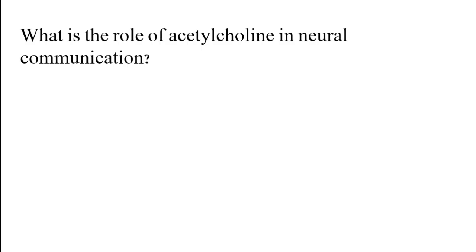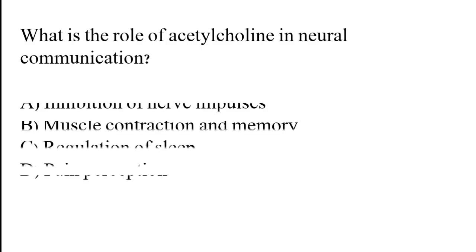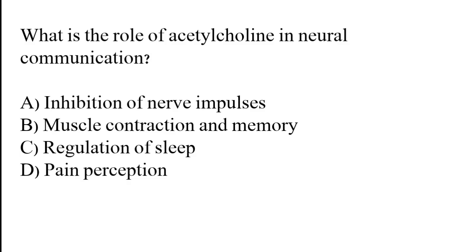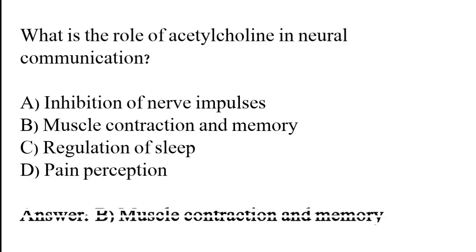What is the role of acetylcholine in neural communication? Options: Inhibition of nerve impulses, muscle contraction and memory, regulation of sleep, pain perception. The correct answer is option B. The role of acetylcholine in neural communication is muscle contraction and memory.